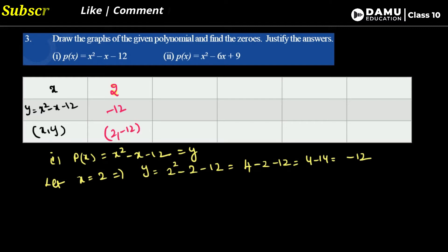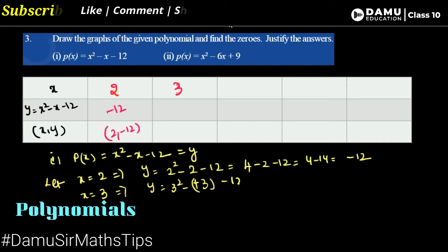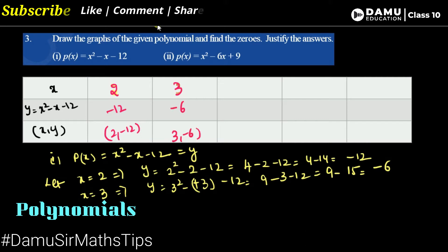Let us take another point. Let x equal to 3. Then y equals 3 square minus 3 minus 12. So 3 square is 9, then 9 minus 3 minus 12 equals 9 minus 15 equals minus 6. So the point is 3 comma minus 6.